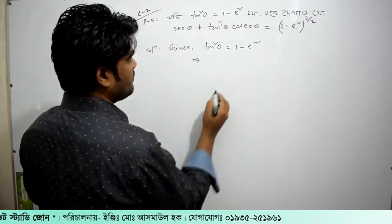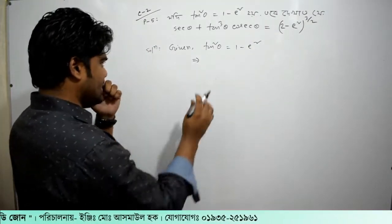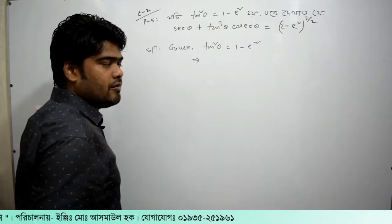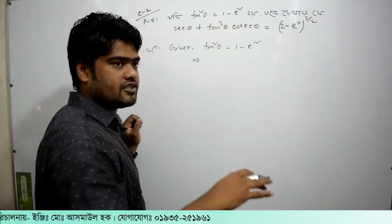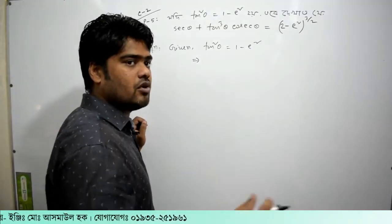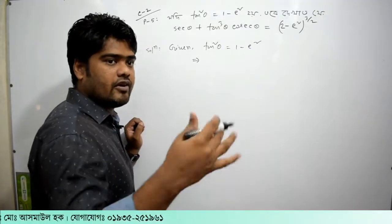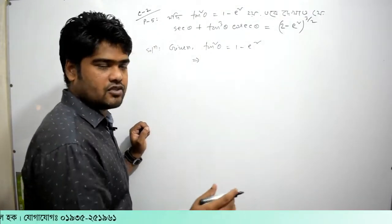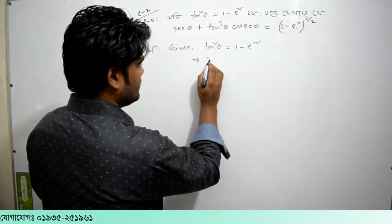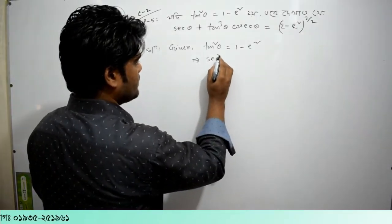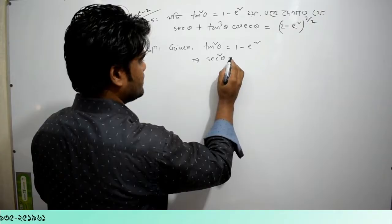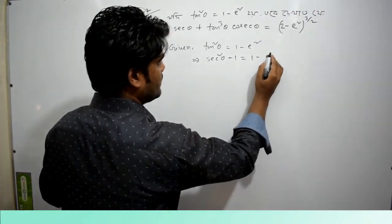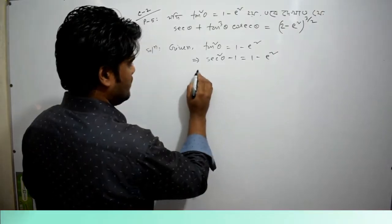If you want to see the answer here, tan square is equal to 1. So, tan square is equal to 2. Let me say tan square is equal to 2, so this is equal to 1 square.